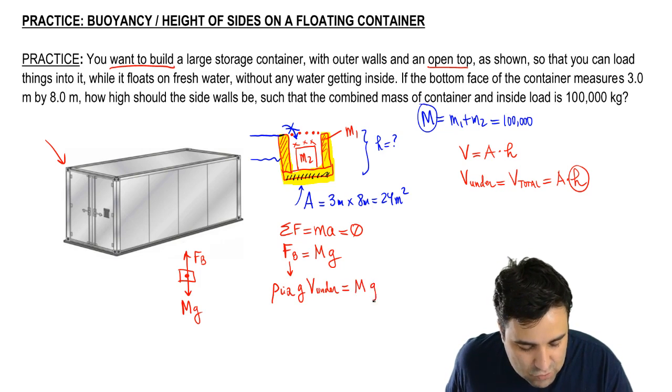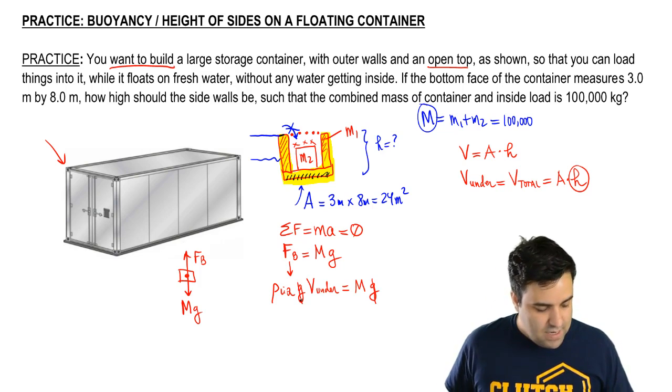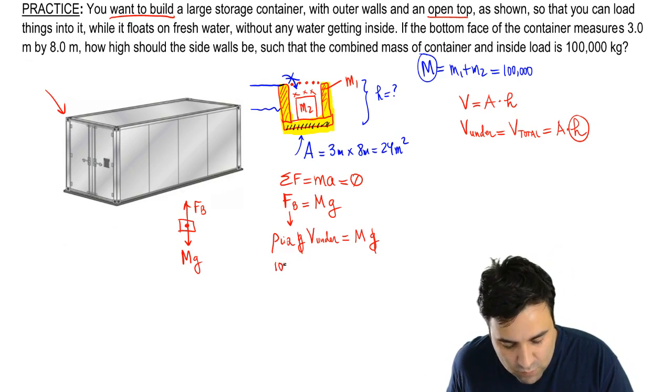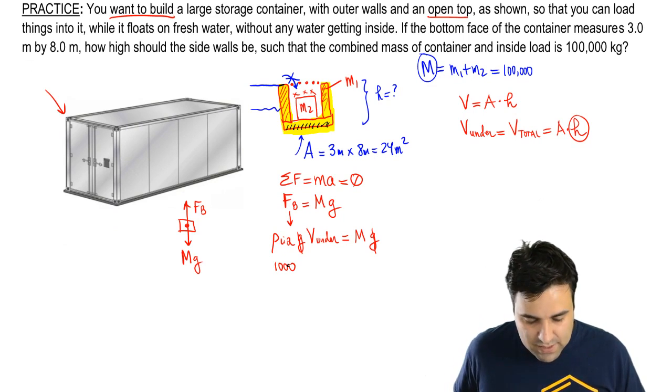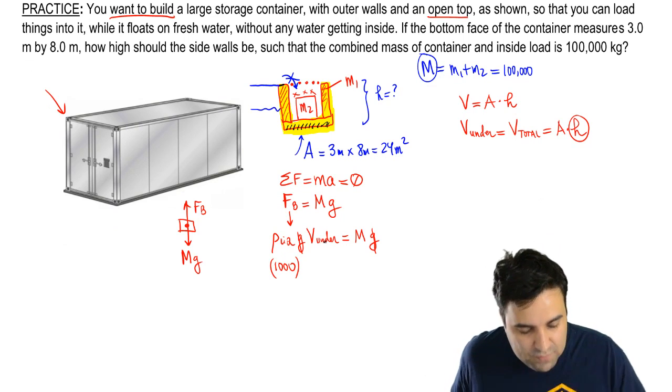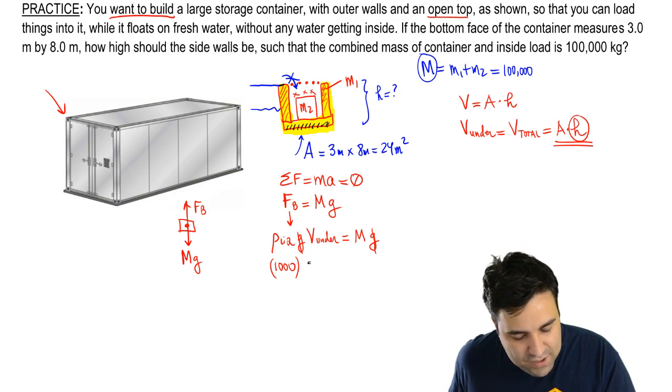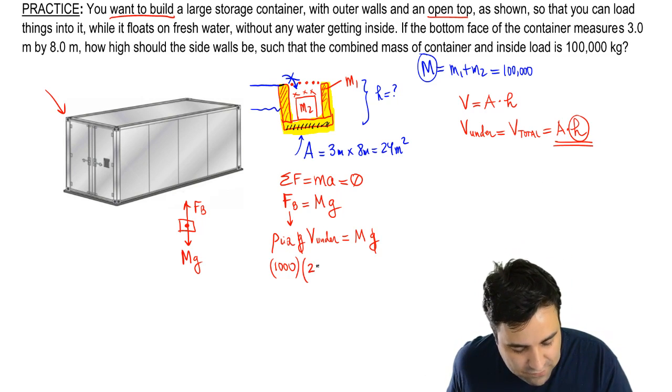The gravity is going to cancel. Now check this out—I know the density of the liquid, it's 1000. Density of the liquid is 1000. I know the volume—I don't know the volume under, but I know it's A times h, and I know that the area is 24, so it's 24h, and that's what we're looking for right there.